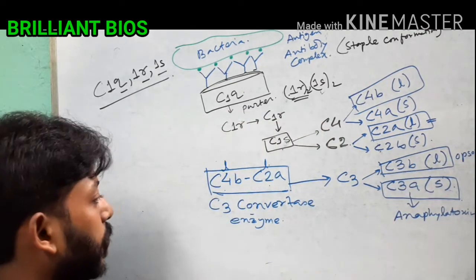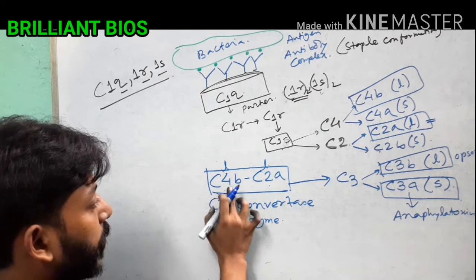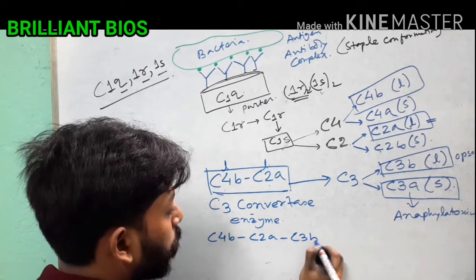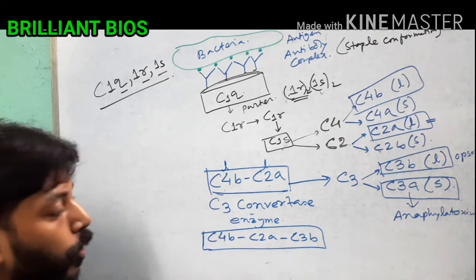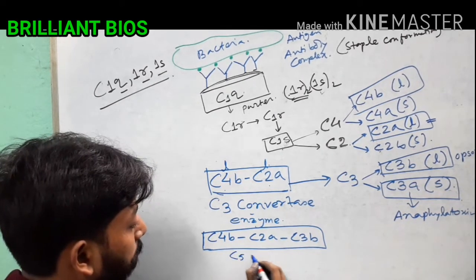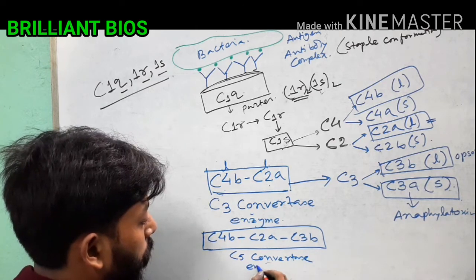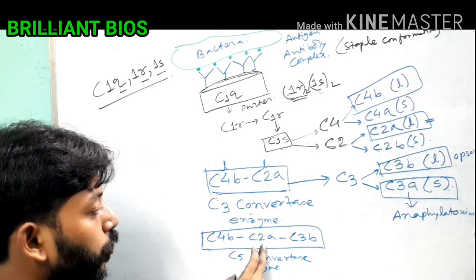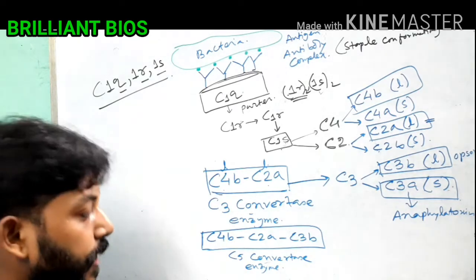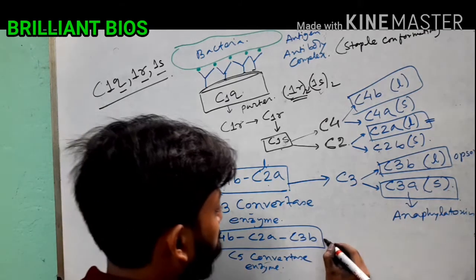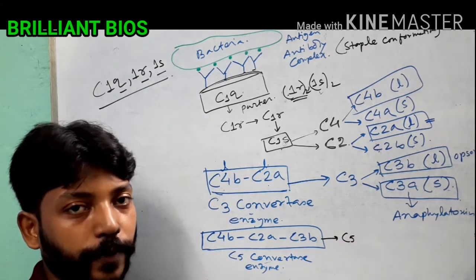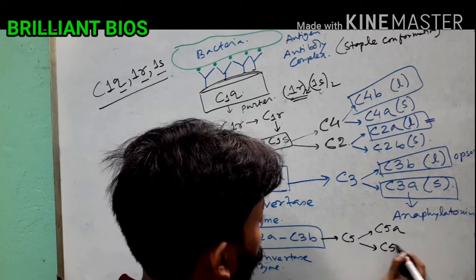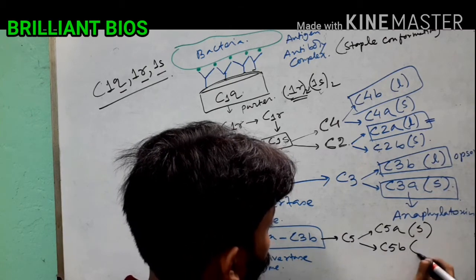After C3b attaches to C4b and C2a, the complex C4b–C2a–C3b becomes the C5 convertase enzyme. The name implies it can cleave C5. C5 is cleaved into two fragments: C5a (the smaller fragment, which acts as an anaphylatoxin) and C5b (the larger fragment).